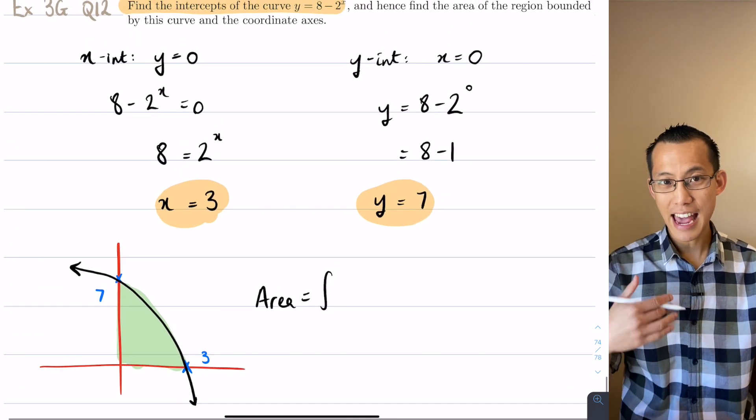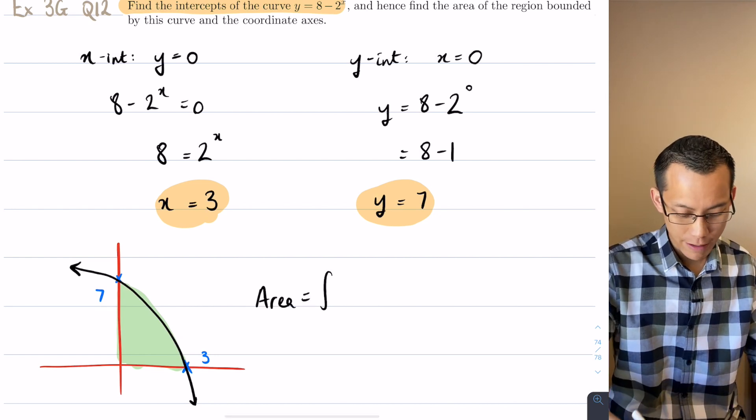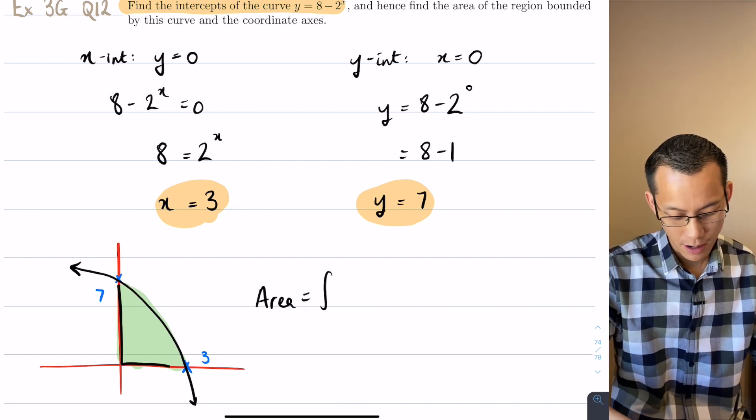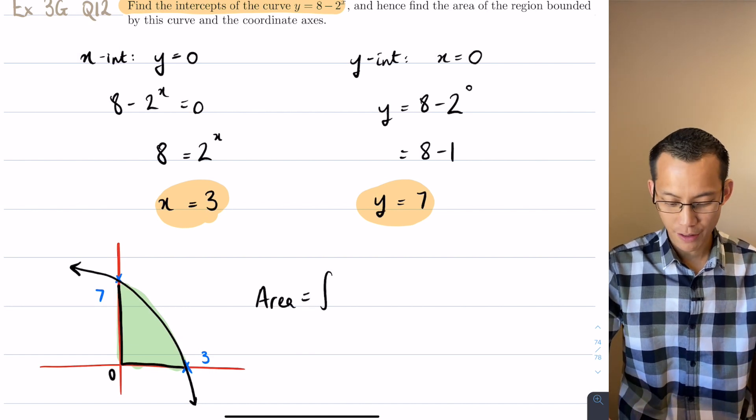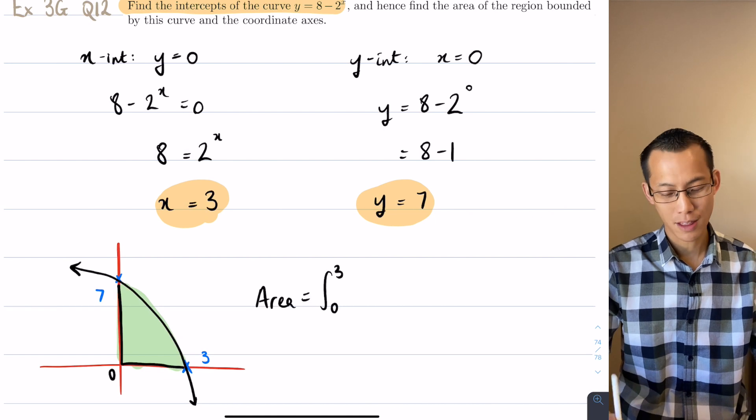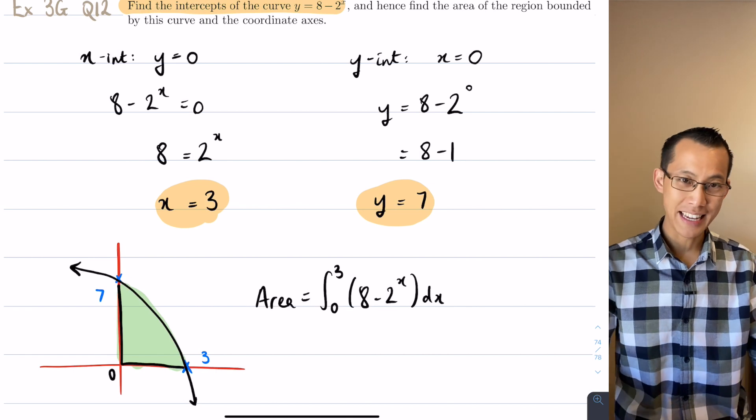All I need is the x-boundaries that fit in this green bordered shape here. Now that 7 is immaterial to that. All I need is an x equals 0 to know that I start from 0 and I go up to 3. Then you've got 8 minus 2 to the x with respect to x.